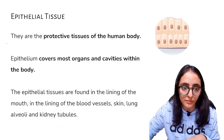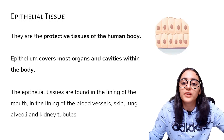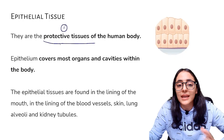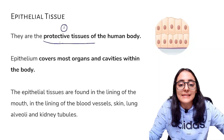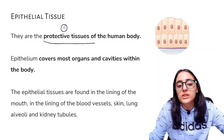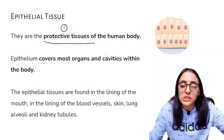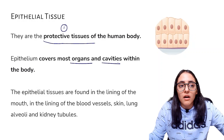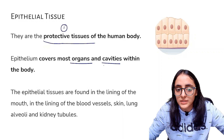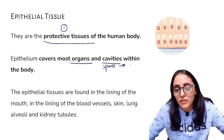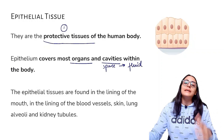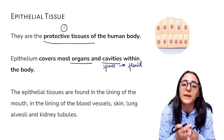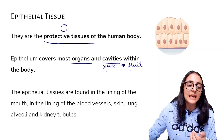Epithelial tissues are protective tissues of the human body. Epithelium covers most of the organs and cavities within the body. Cavities are spaces in the body filled with fluid. Epithelial tissue provides covering and protection — it is found in the lining of the mouth, lining of blood vessels, and our entire skin, which is the outermost layer, is basically epithelial tissue.